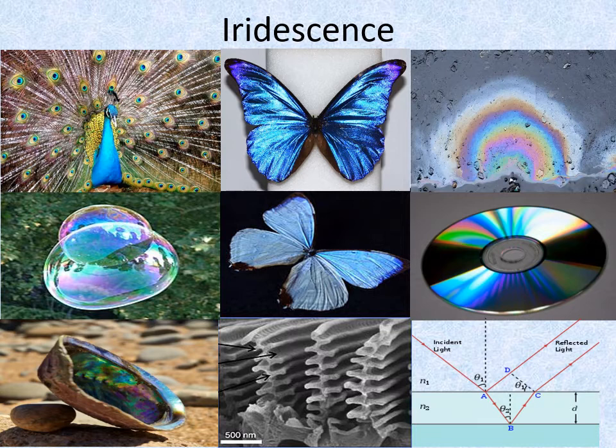In all these examples, there's either a thin transparent layer such as oil on water, the walls of a bubble and the coating of a DVD or mother of pearl, or in the case of the butterfly wings and bird feathers, there are a closely packed series of evenly spaced reflecting surfaces. In either case, the principle is the same.